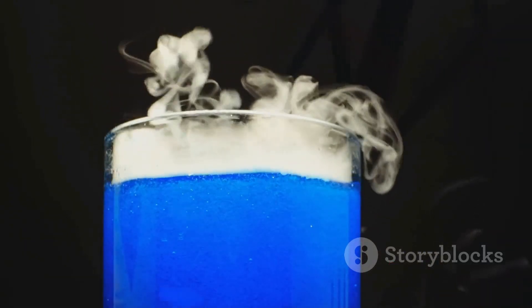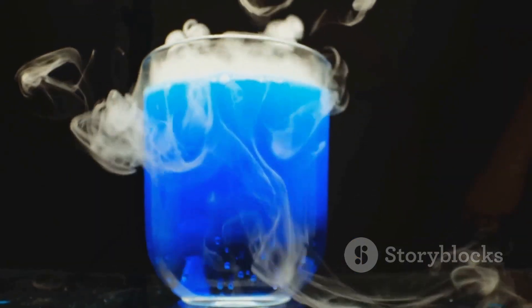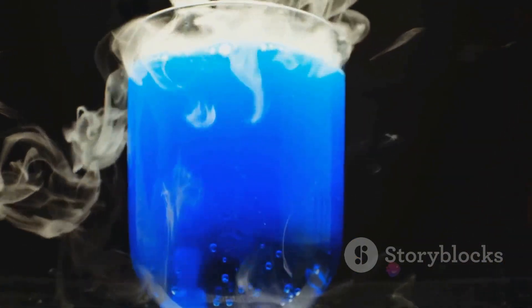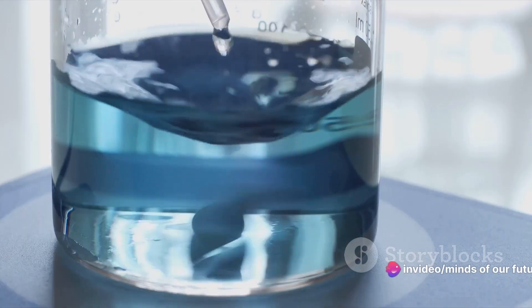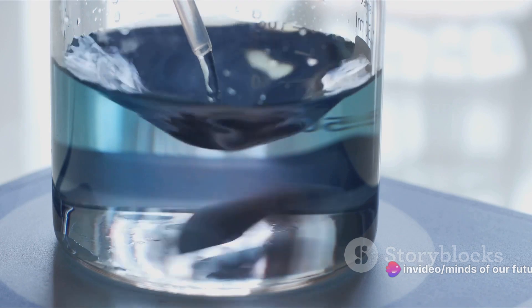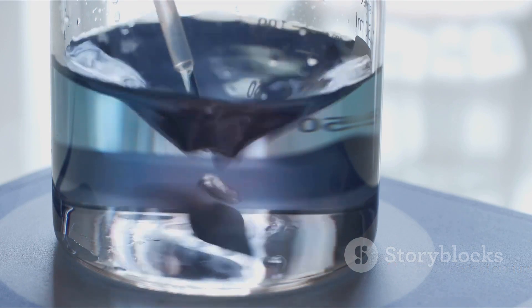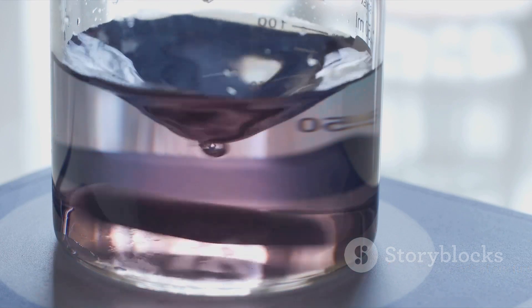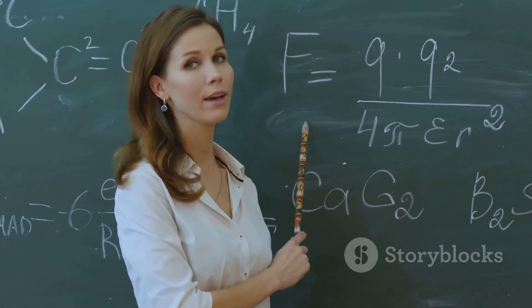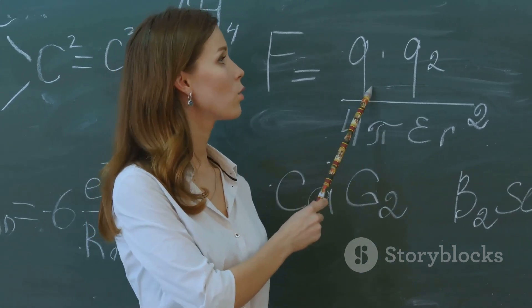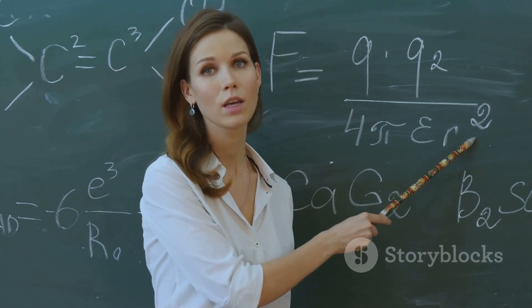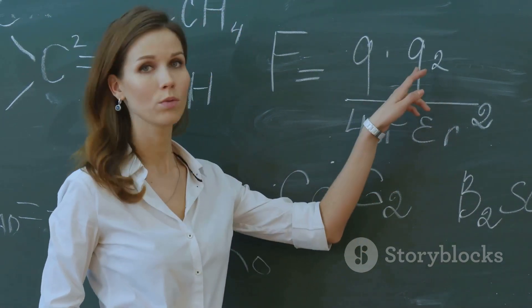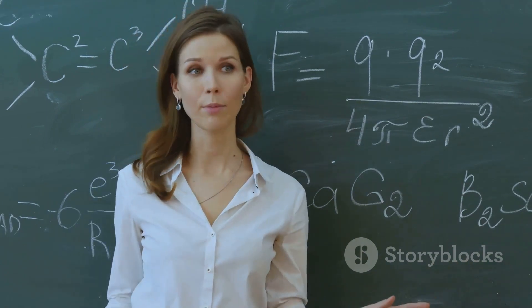We've seen how temperature, impurities, and the liquid's nature can affect this tension, making it stronger or weaker. But surface tension is not just a curiosity — it has practical applications in our everyday lives, from the mundane, like washing dishes, to the extraordinary, like fueling rockets in space. It's a fundamental principle that governs our world in ways we often overlook. So next time you see a bug walking on water or a droplet forming, you'll know the science behind it. Surface tension: the invisible skin of the liquid.